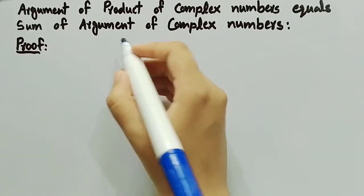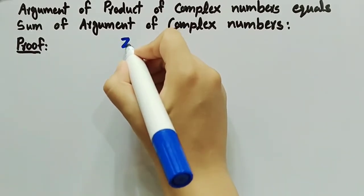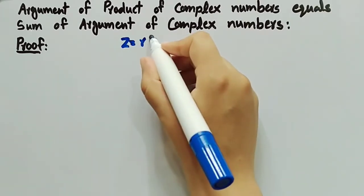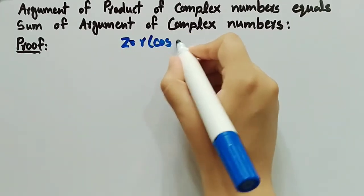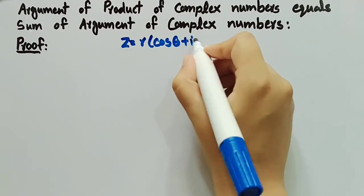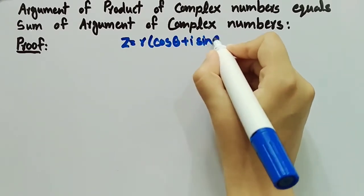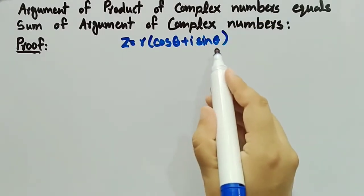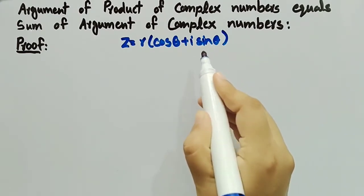We know that the polar form of a complex number z is equal to r(cos θ + i·sin θ). We will use this polar form to find the product of complex numbers.